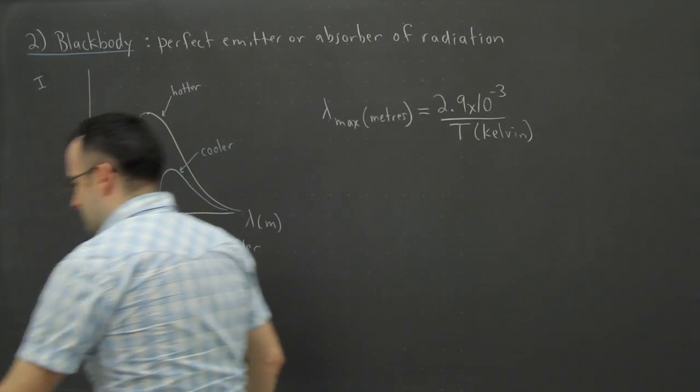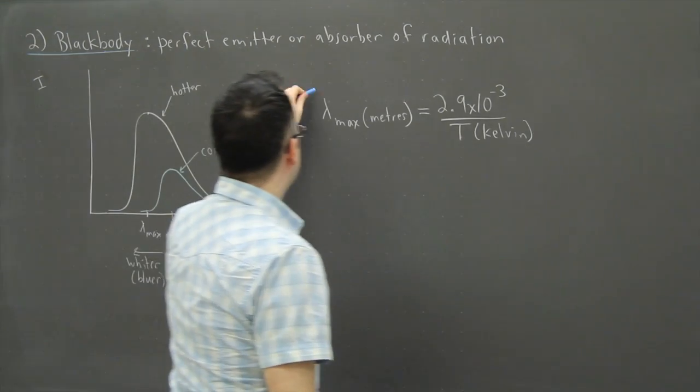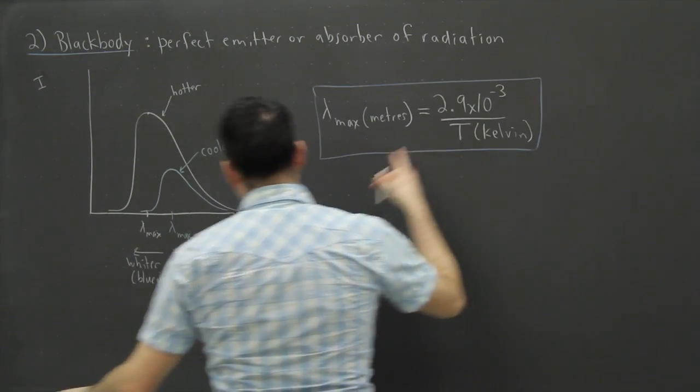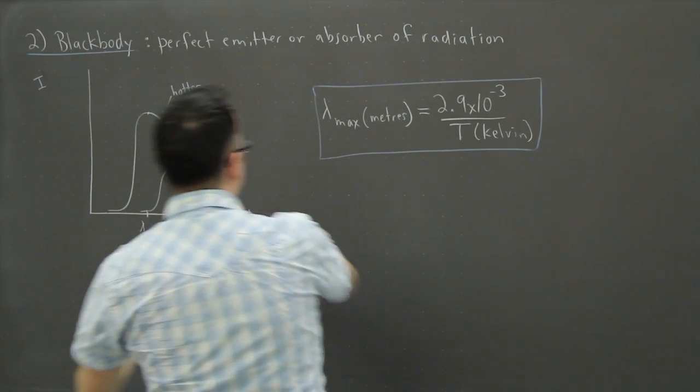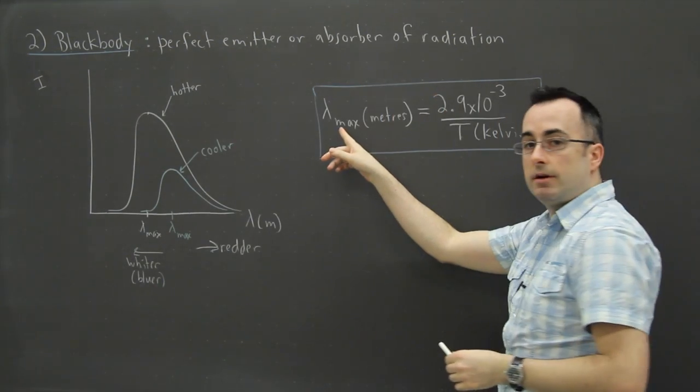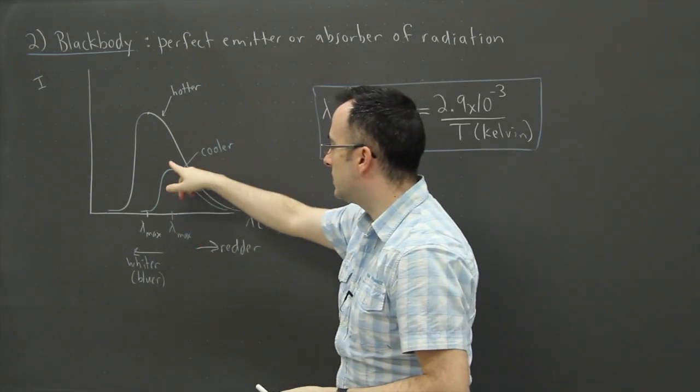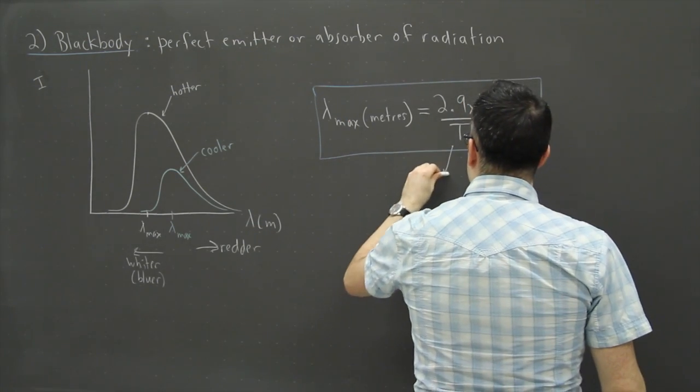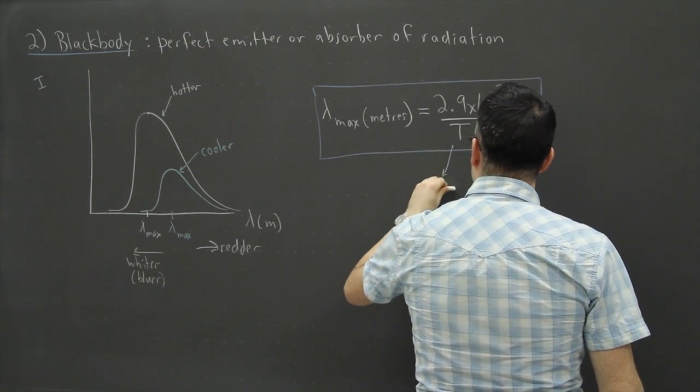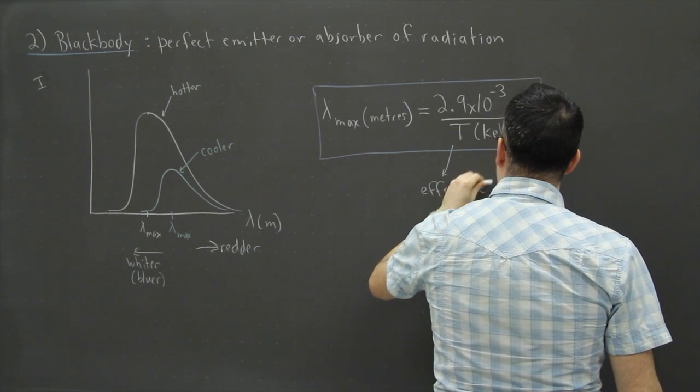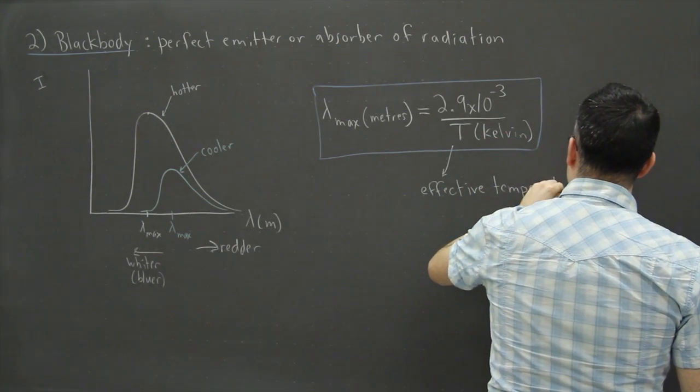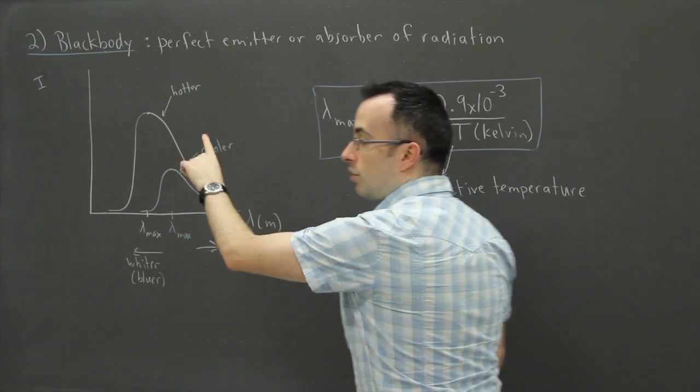Now this equation right here is very useful. It relates the temperature of something with its peak wavelength. Remember that's the wavelength associated with the maximum intensity. Now T right here, this is what we call an effective temperature.